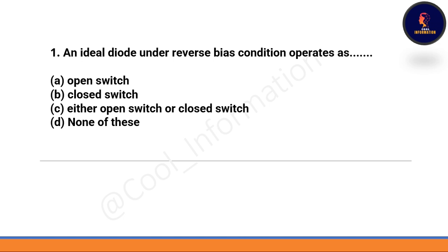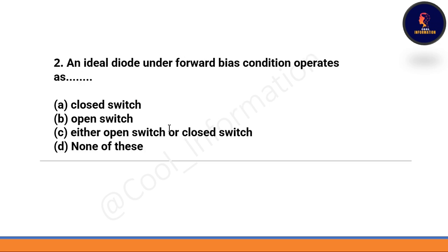First question: An ideal diode under reverse bias condition operates as — option A: open switch, option B: closed switch, option C: either open switch or closed switch, option D: none of these. The correct option is option A — open switch. Next question: An ideal diode under forward bias condition operates as — closed switch, either open/closed switch, or none of these. The correct option is option A — closed switch.